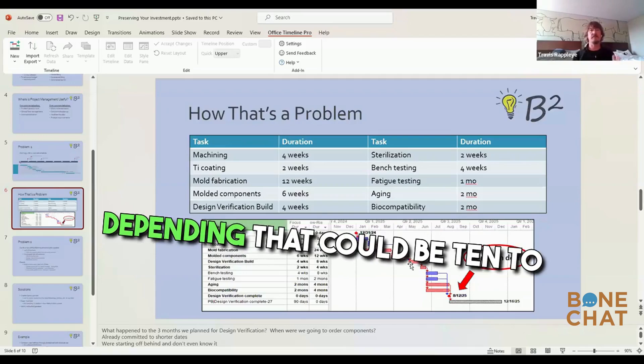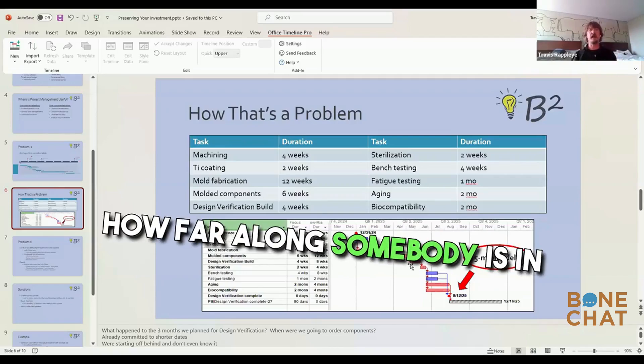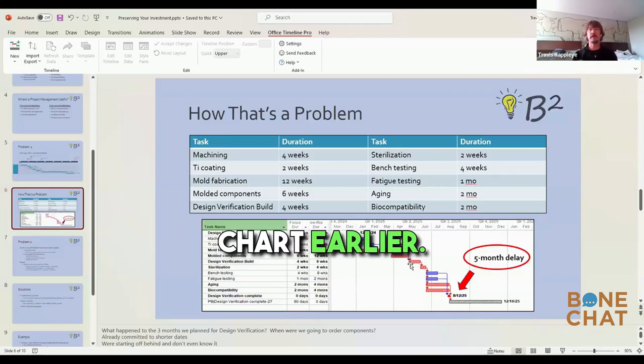Depending, that could be 10 to 40 hours, how far along somebody is in their work without a Gantt chart. Earlier, it's on the lower side.